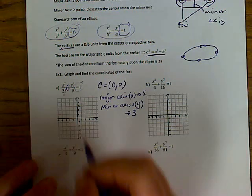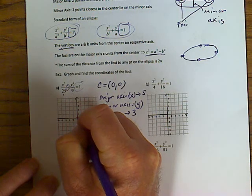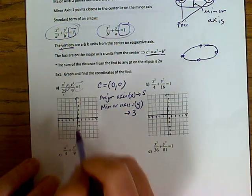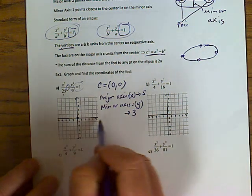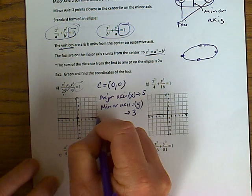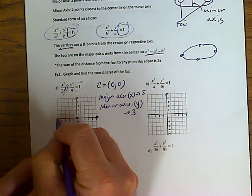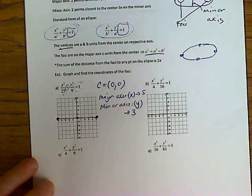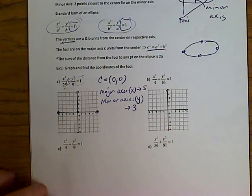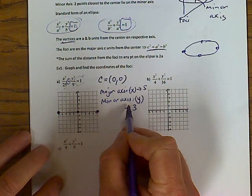For graphing it's pretty easy. Plot the center (0, 0), then along the x-axis — because x is the major axis — we're going to go five units out and five units back.